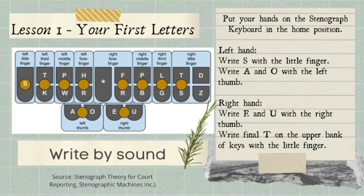Then you write vowels A and O with the left thumb. Using your right hand, you write vowels E and U with the right thumb. And then for final T, write final T on the upper bank of keys with the little finger. So again: initial S is left little finger, final T is right little finger, vowels A and O is left thumb, vowels E and U is right thumb.